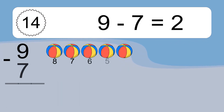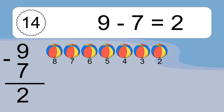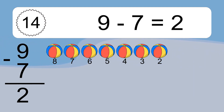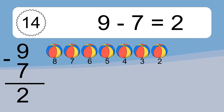9 minus 7 equals 2. Let's count it: 8, 7, 6, 5, 4, 3, 2.